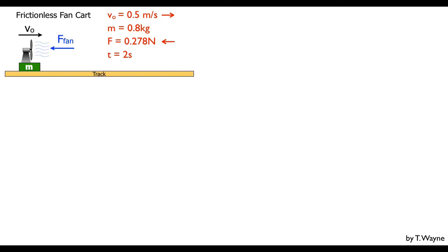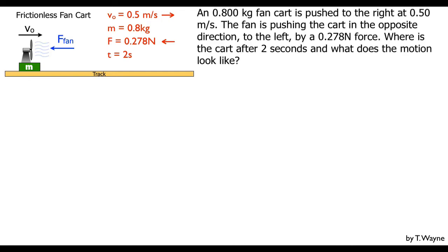To make sense of this, let's turn this into a word problem. I'll take an 0.800 kg cart and push it to the right at 0.5 meters per second, and the fan is pushing the cart in the opposite direction, to the left, by a 0.278 Newton force. Where is the cart after two seconds, and what does the motion look like? That's what I'm going to look at, and that's what the computer's going to help us to figure out.